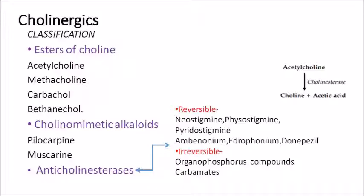Anticholinesterases are compounds that destroy the cholinesterase enzyme. Cholinesterase metabolizes acetylcholine, so when you inhibit it, acetylcholine accumulates and produces a cholinergic effect. Anticholinesterases can be reversible or irreversible. Reversible ones are the stigmins and onium drugs: neostigmine, physostigmine, pyridostigmine, ambenonium, and edrophonium. Irreversible ones are organophosphorus compounds, which bind irreversibly to the cholinesterase enzyme.